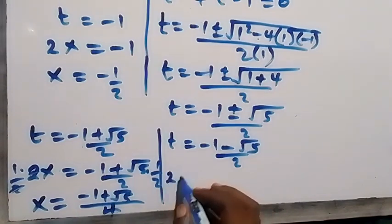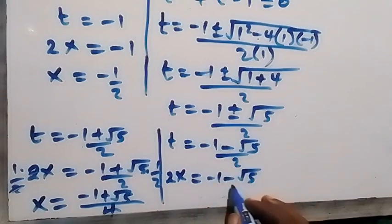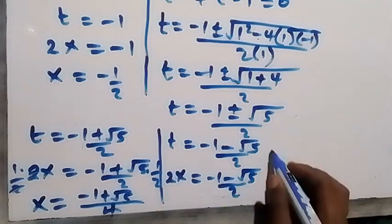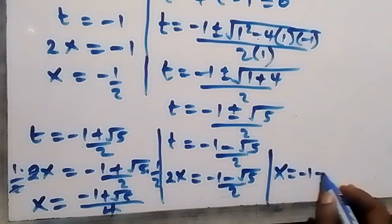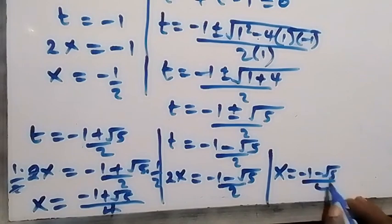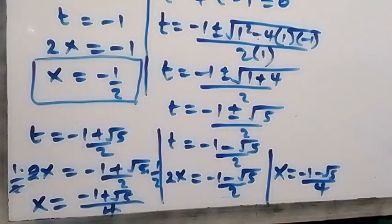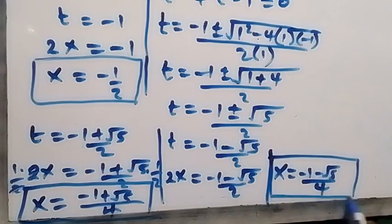Also from the second case, 2x equals to minus 1 minus root 5 over 2. Let's also multiply by 1 over 2, and we have x equals to minus 1 minus root 5 over 4. So we have these 3 values of x: x equals to minus 1 over 2, x equals to minus 1 plus root 5 over 4, and x equals to minus 1 minus root 5 over 4.